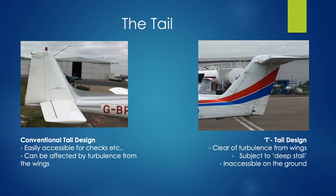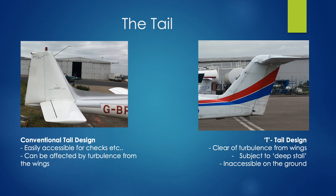Next we're going to look at the tail, otherwise known as the empennage, and it consists of two elements: a horizontal stabiliser and a vertical stabiliser. The most conventional design has the horizontal stabiliser lower down with the vertical stabiliser going up. It's better because it's easily accessible for checking on the ground, but it's more susceptible to turbulence from the wings. There are also T-tail designs where the horizontal stabiliser is higher up, meaning it's clear of that turbulence and slightly smoother to control. However, it's inaccessible on the ground, making it harder to check for damage on preflights. Also, a high T-tail design is susceptible to a deep stall, which is talked about in principles of flight.